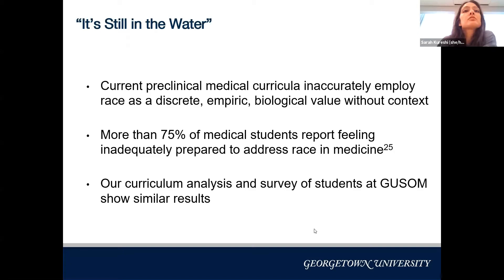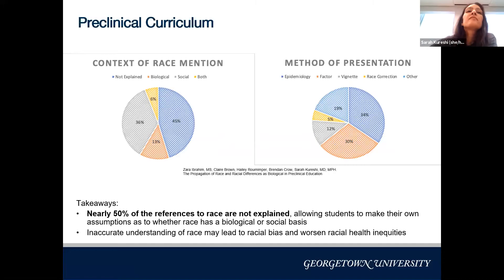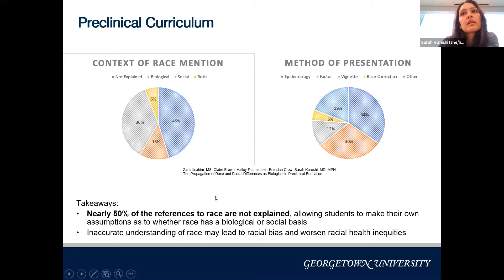Some students and I did a curriculum analysis and survey of Georgetown's curriculum. We looked at all 400 lectures in one year and how race was used by lecturers. The big takeaway: about 50 percent of the time race was mentioned, nothing was explained — just an epidemiological stat or prognostic factor like 'African Americans are at higher risk for this' with no context. That allows students to form their own assumptions about whether race is biological or social, which can lead to biases and worsen racial health inequities.